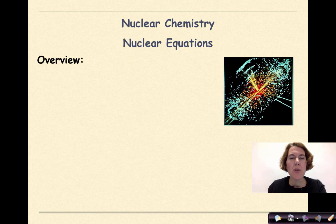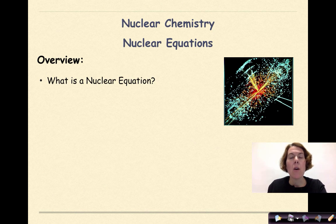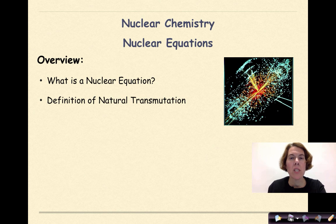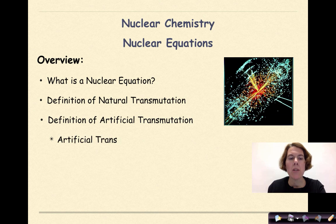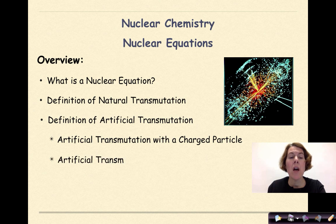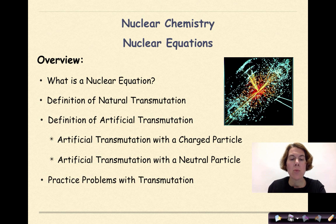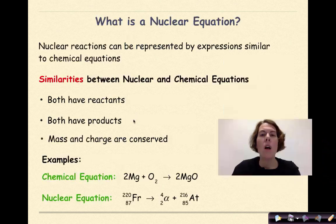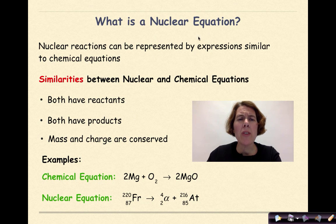Hi, welcome to nuclear chemistry. My name is Dr. English. Today we're going to be talking about different types of nuclear equations — specifically: what is a nuclear equation, the definition of natural transmutation, the definition of artificial transmutation, artificial transmutation with a charged particle, artificial transmutation with a neutral particle, and finally some practice problems with transmutation.